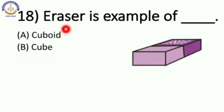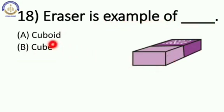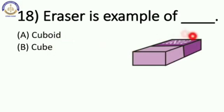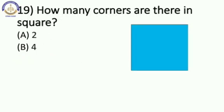Eraser is an example of blank. Eraser kiska example hai — cuboid or cube? Cuboid. Eraser is cuboid. Very good. So our answer is option number A, cuboid.